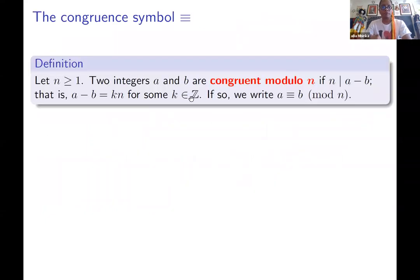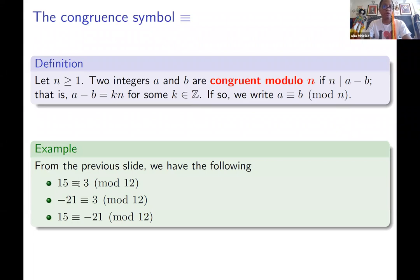Let's define a symbol. We say two integers A and B are congruent mod N, modulo N, if N divides their difference — that is, if A minus B is a multiple of N for some integer K. Symbolically, we write A congruent to B, where the triple equal sign is pronounced 'congruent to,' modulo N. From the previous example, 15 is congruent to 3 mod 12, negative 21 is congruent to 3 mod 12, and by transitivity, 15 is congruent to negative 21 mod 12.